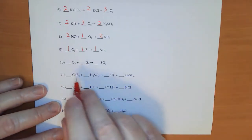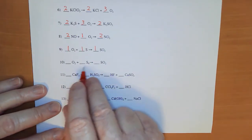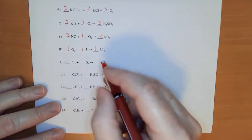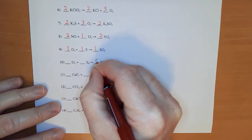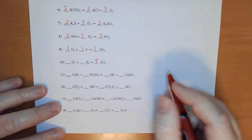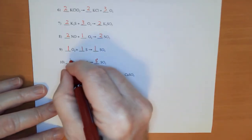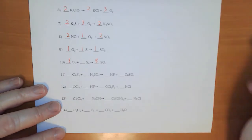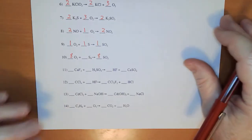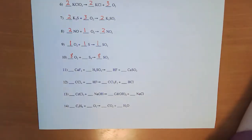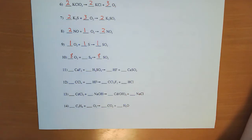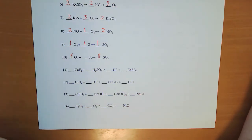Number 10 — that's an S₈, so I'm going to have to put an 8 here. 2 times 8 — so I'm going to have to put an 8 there. 2 times 8. Now, numbers 1 through 10 were all designed to be relatively easy, relatively straightforward. They're going to get harder as we go.